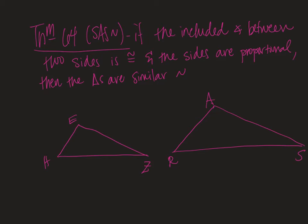So for example, if I knew that HE over AR, so this side over this side, was proportional, or the ratios were equal to EZ over AS.